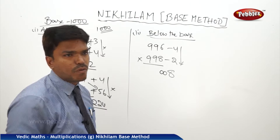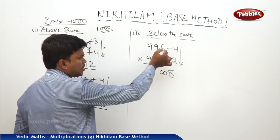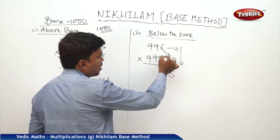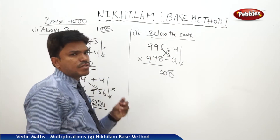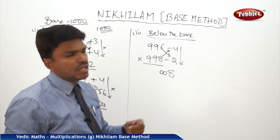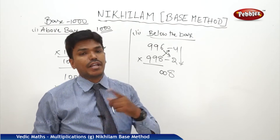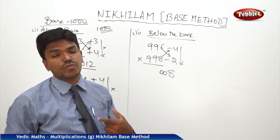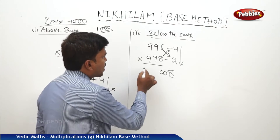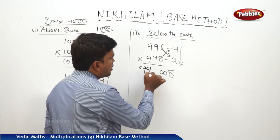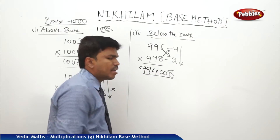So add two more zeros before the number, so that there is no problem with the right side part. Now cross subtraction for the left side part: 996 minus 2, or 998 minus 4 — both will give the same answer. How much? 994.